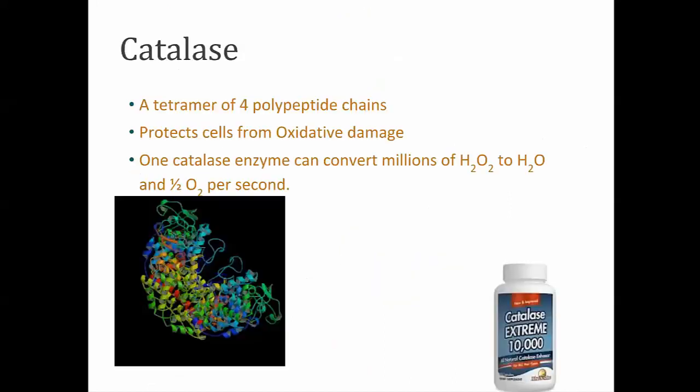The enzyme we are looking at this week is composed of four polypeptide chains, so four tertiary structures stuck together. It protects cells from oxidative damage as we produce that hydrogen peroxide when we break down fatty acids. One catalase enzyme can convert millions of peroxide molecules to water and oxygen every second. Here is the reaction: two H2O2, so that's two peroxides, will yield two water molecules and a molecular oxygen.